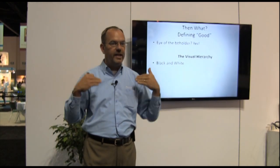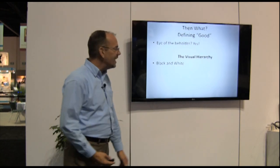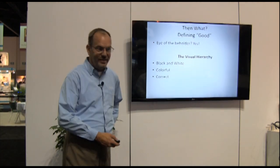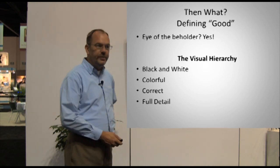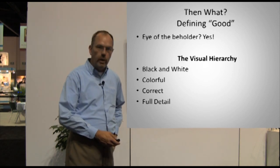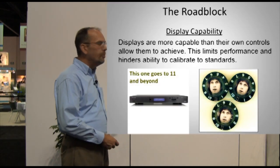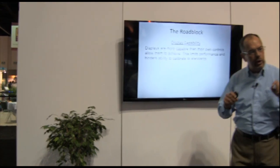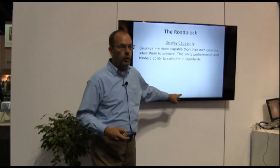We see all detail in black and white. Second, I like colors — lots of saturated, deep, beautiful colors — and I like the colors to be correct; I don't want everyone looking sunburned. And then I like full detail: I bought a 1920 by 1080 TV, I'd like to see something close to that. The roadblock is that these displays are more capable than their controls allow them to be — I can't achieve the full potential of the display with just the controls inside the display.